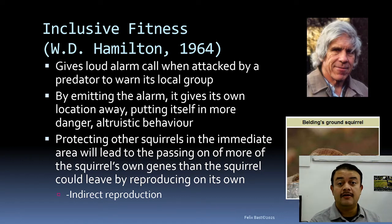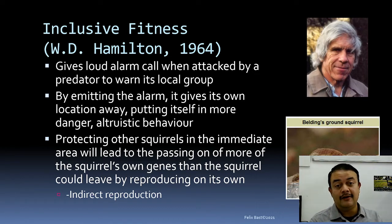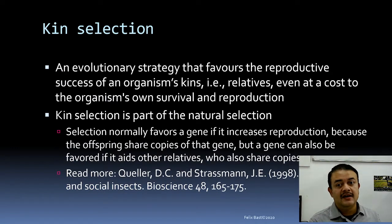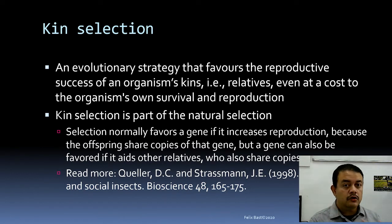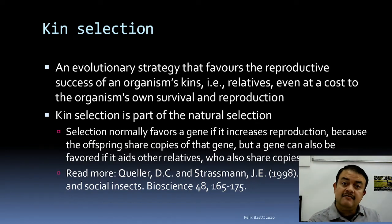Even if you are infertile, indirect reproduction through supporting relatives makes life meaningful in an evolutionary sense. This brings us to kin selection — an evolutionary strategy that favors the reproductive success of an organism's kin (relatives). Inclusive fitness is all about this, like the squirrel example. It is similar to nepotism — self-sacrifice for relatives, even at a cost to your own survival and reproduction.